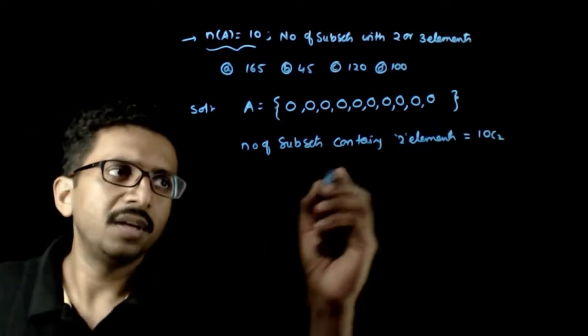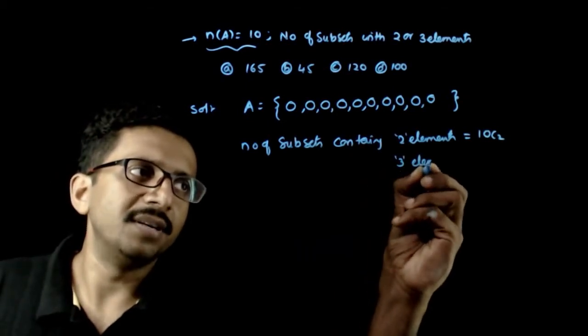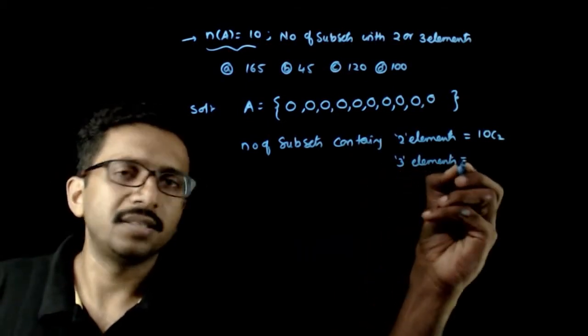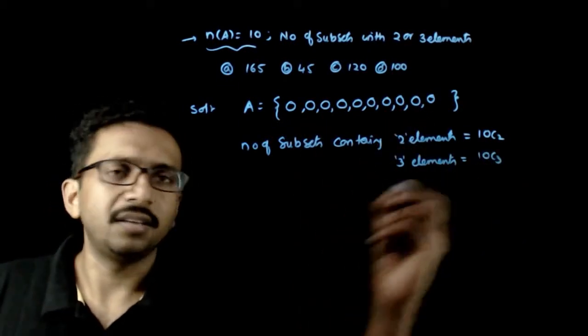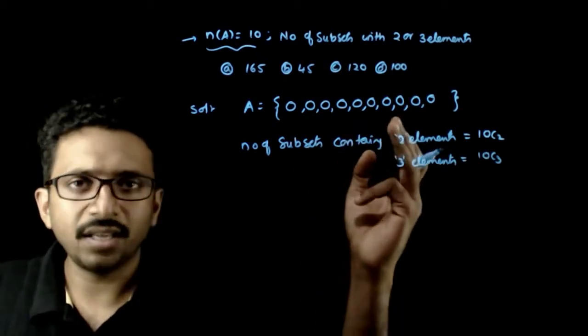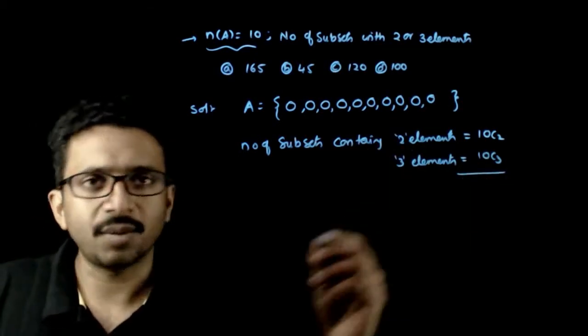10C2. And number of subsets containing 3 elements is given by, from 10 select any 3 elements, 10C3. Total number of subsets containing either 2 elements or 3 elements is a sum of these two.